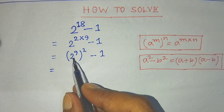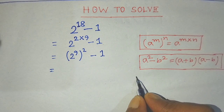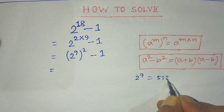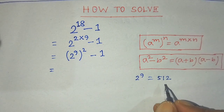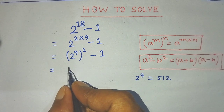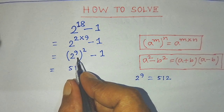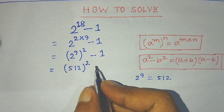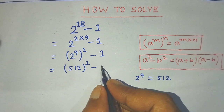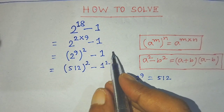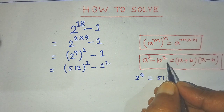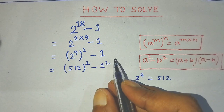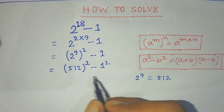After that, we have to simplify 2 to the power 9. If you multiply 2 nine times, you get 512. So in the place of 2 to the power 9, we write 512, giving us 512 squared. And in the place of 1, we write 1 square, since 1 squared equals 1.